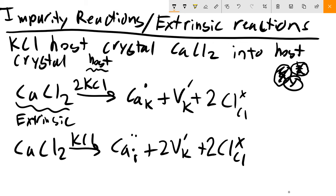For Y: interstitials and vacancies behave similarly for mass balance - in a perfect ionic crystal they should have no elements, so no mass contribution there. We do have K appearing at K sites - two of them - and two Cls. So we put a prefactor of two on the KCl host side, and now we have our second complete extrinsic reaction. There are many more reactions you could write beyond these two.